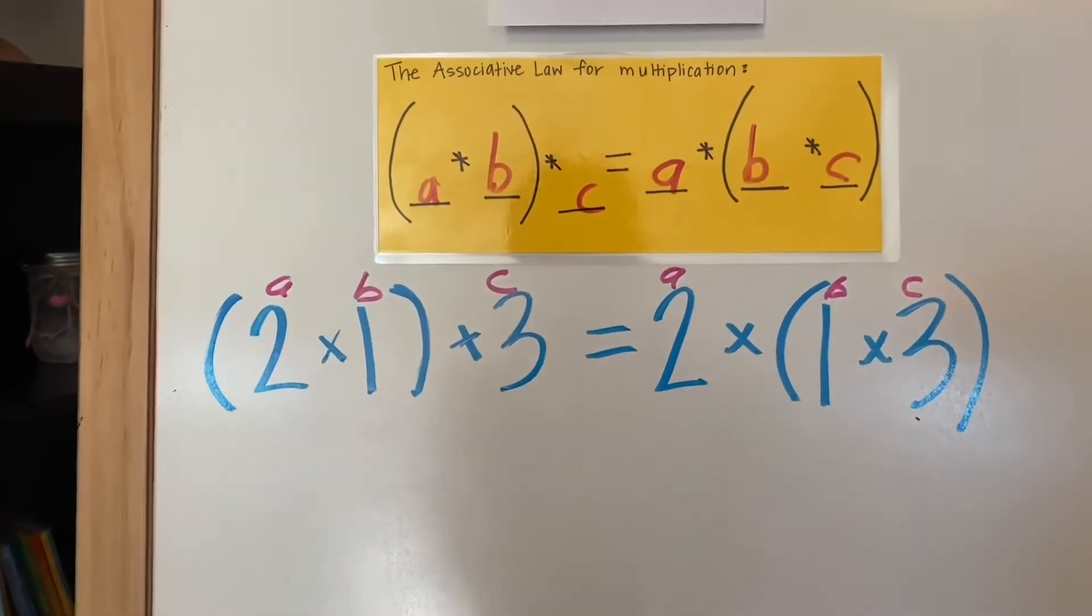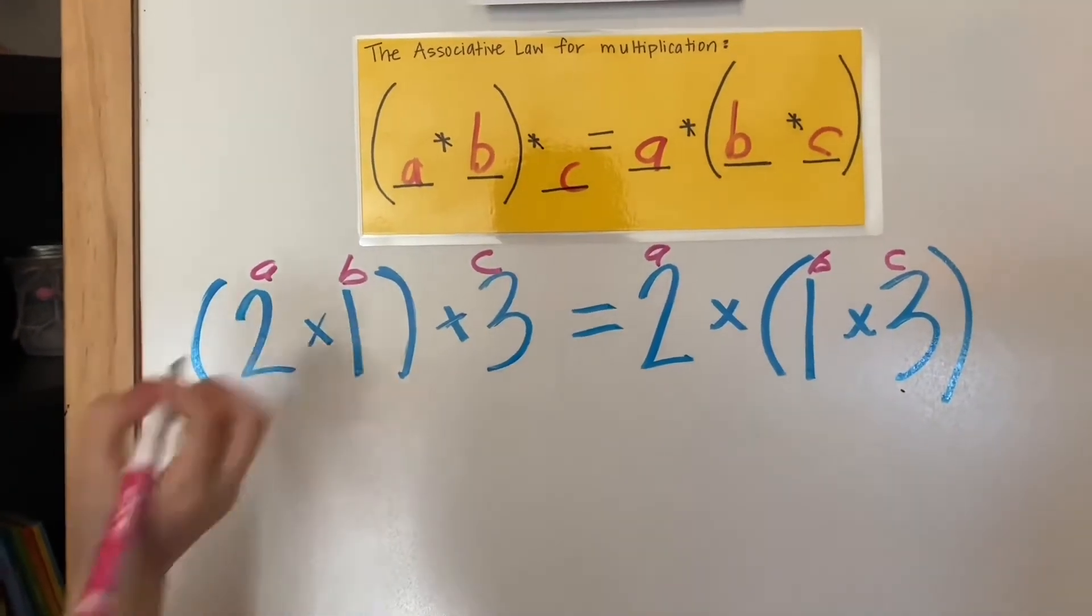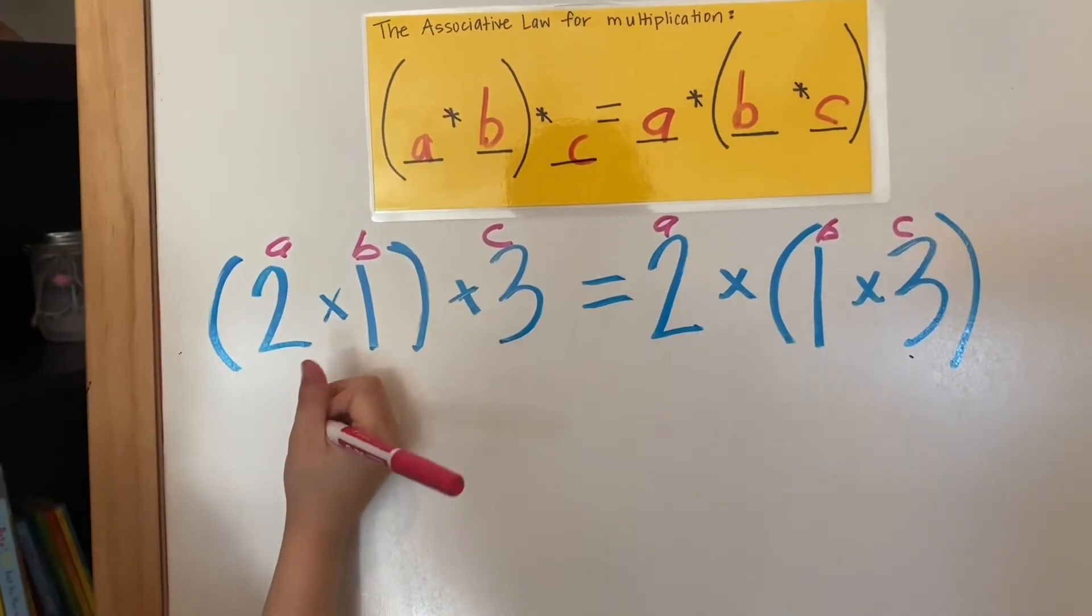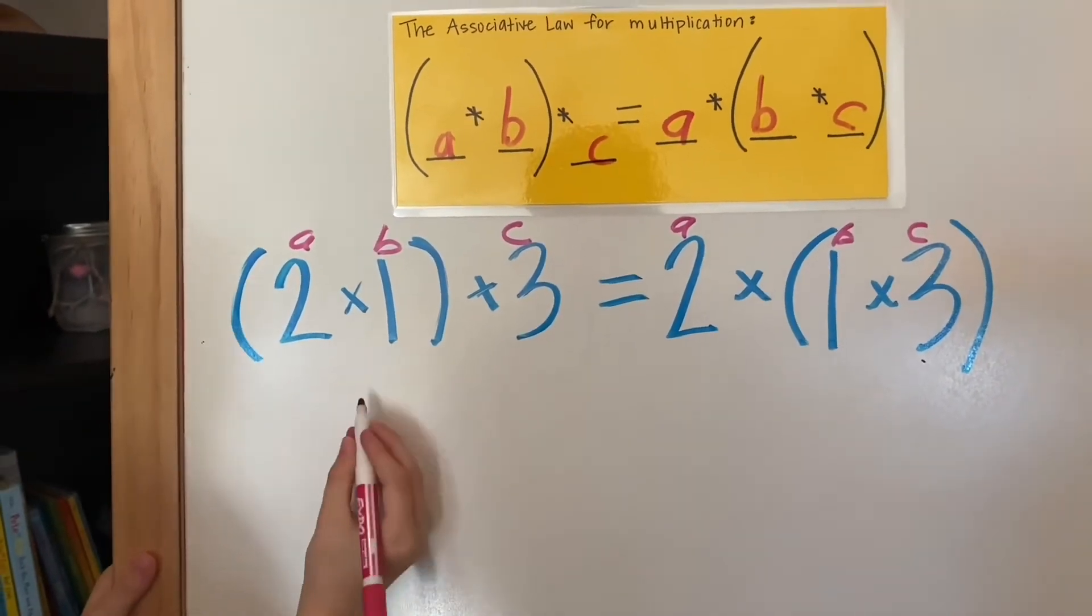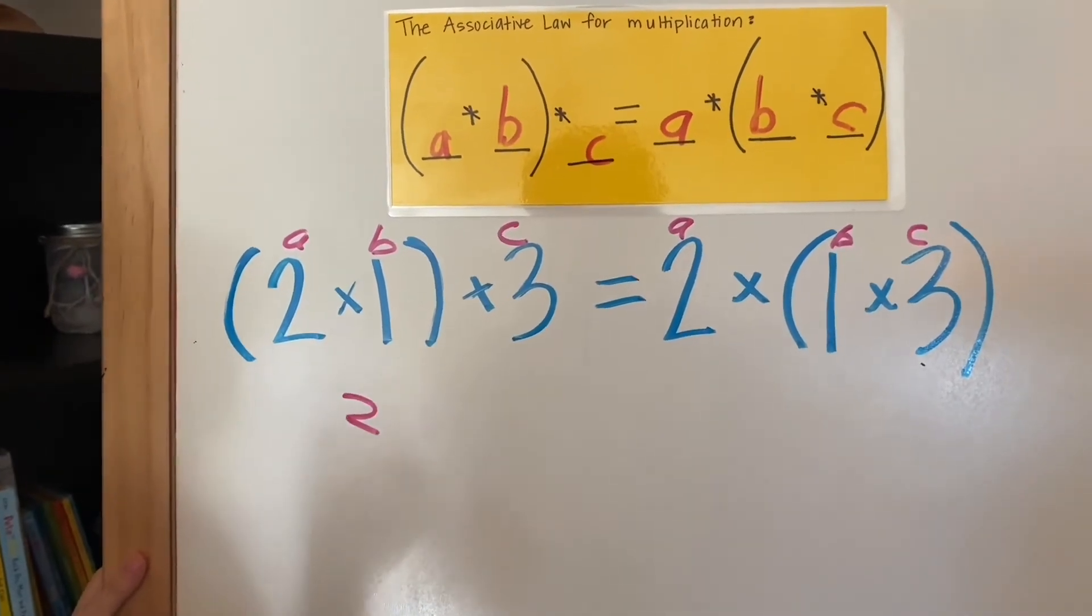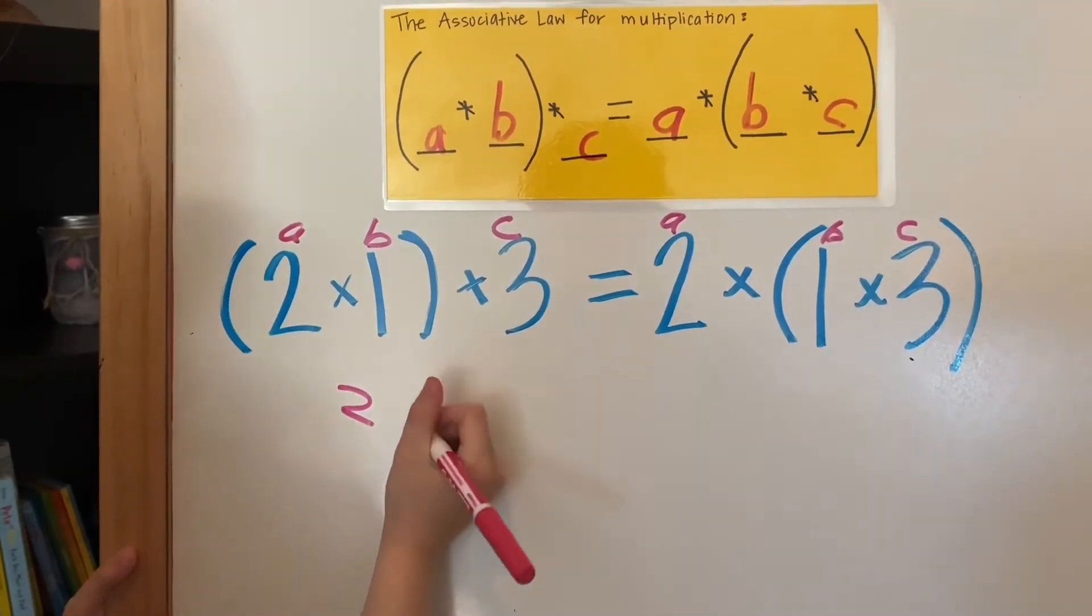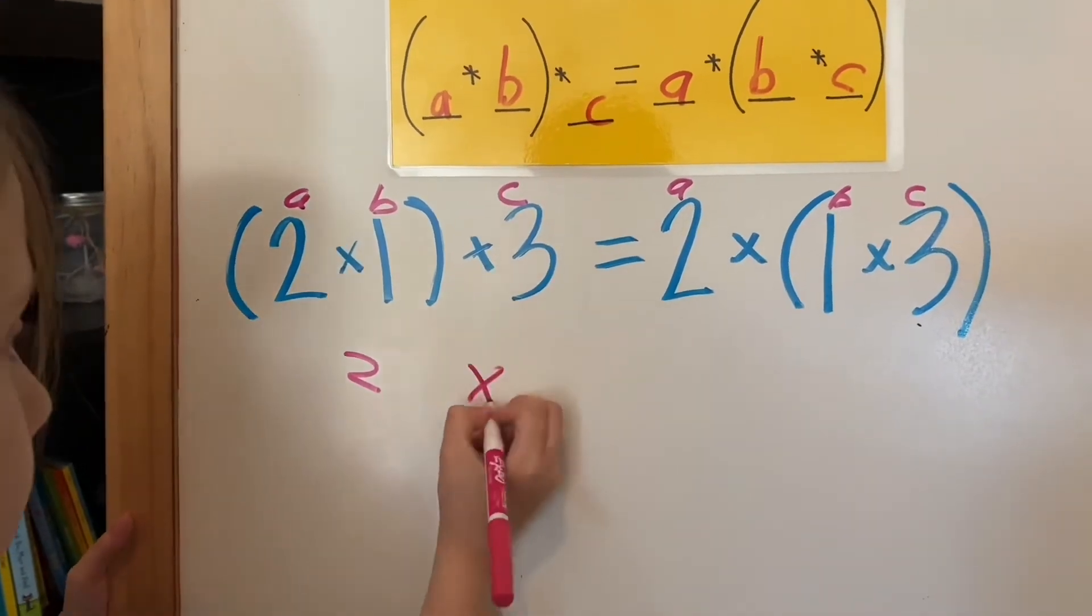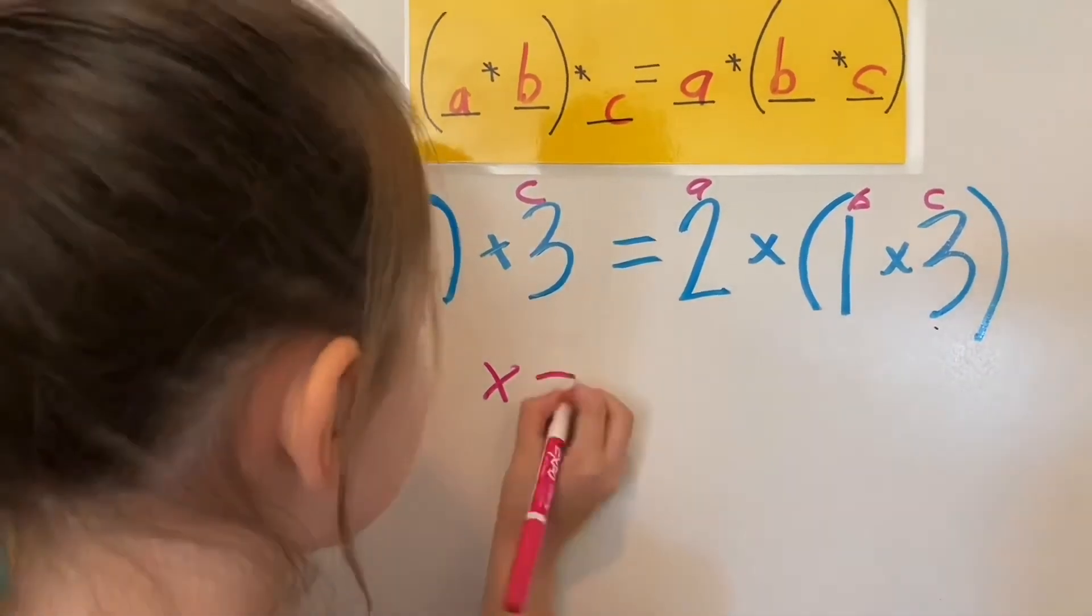All right, so where do you start? You start with the parentheses first. Good, 2 times 1 is 2. Bring down that multiplication sign times 3 equals.